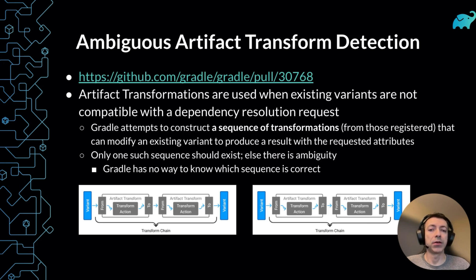Multiple transforms can be run in sequence to produce a chain of transformations that will ultimately satisfy a request. These transformations are not prioritized in any way. So if two different equal-length sequences of transformations that produce the same result exist, Gradle has no way of knowing which one it should use. This case should produce an ambiguity failure, as each transform likely does very different things producing different outputs.